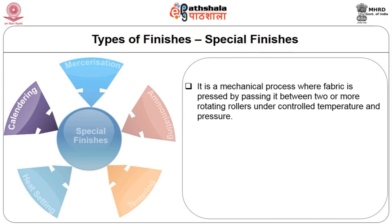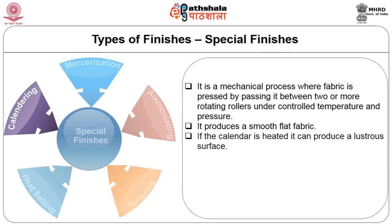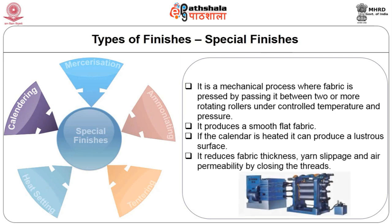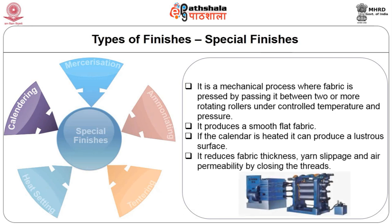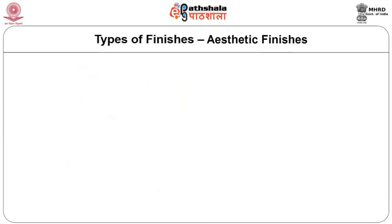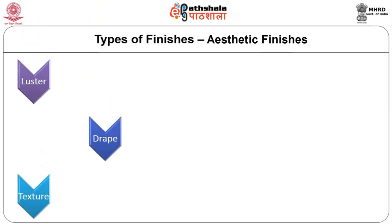Calendaring is a mechanical process where fabric is pressed by passing it between two or more rotating rollers under controlled temperature and pressure. It produces a smooth, flat fabric. If the calendar is heated it can produce a lustrous surface. It reduces fabric thickness, yarn slippage and air permeability by closing the threads.